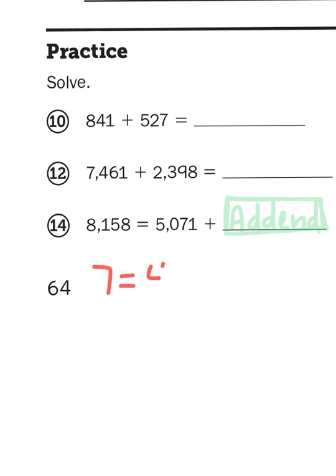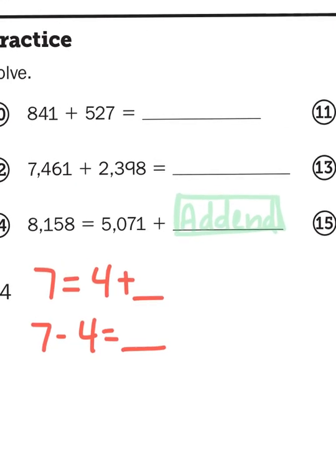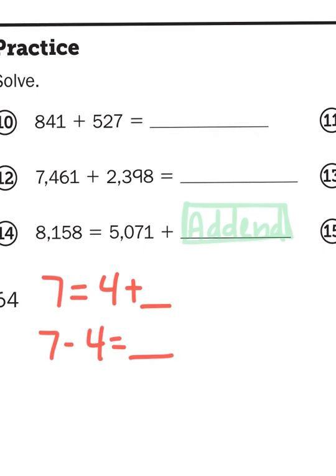7 equals 4 plus something. Well, that's the same as saying 7 minus 4 equals something. So that's what we're going to do with this number. But instead of it being 7 minus 4, it's going to be 8,158 minus 5,071.